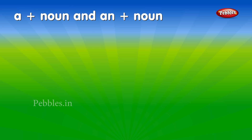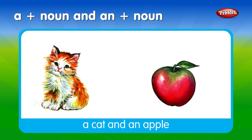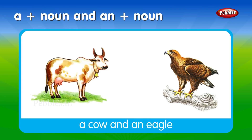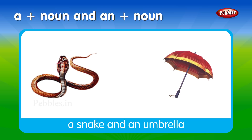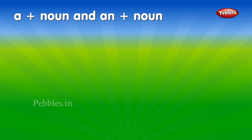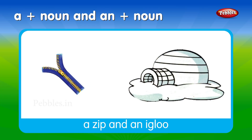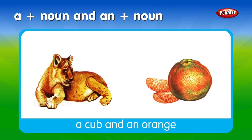A plus noun and an plus noun. A cat and an apple. A cow and an eagle. A snake and an umbrella. A zip and an igloo. A cub and an orange.